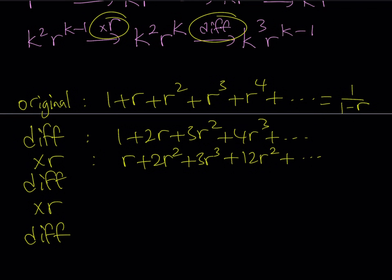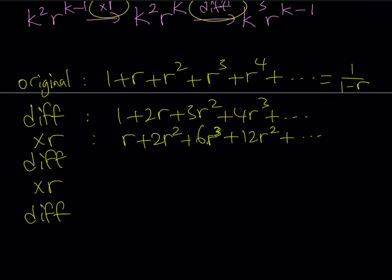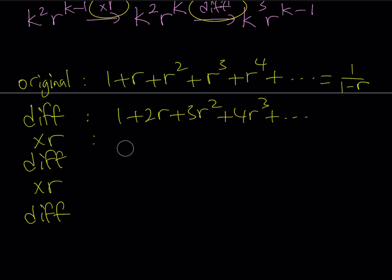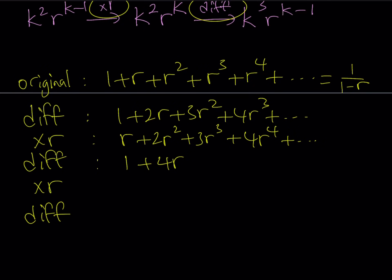Then we differentiate again. Differentiating r plus 2r squared plus 3r cubed plus 4r to the fourth gives 1 plus 4r plus 9r squared plus 16r cubed, and so on. Notice that in a previous video the coefficients were perfect squares — and this is where we get the perfect squares.